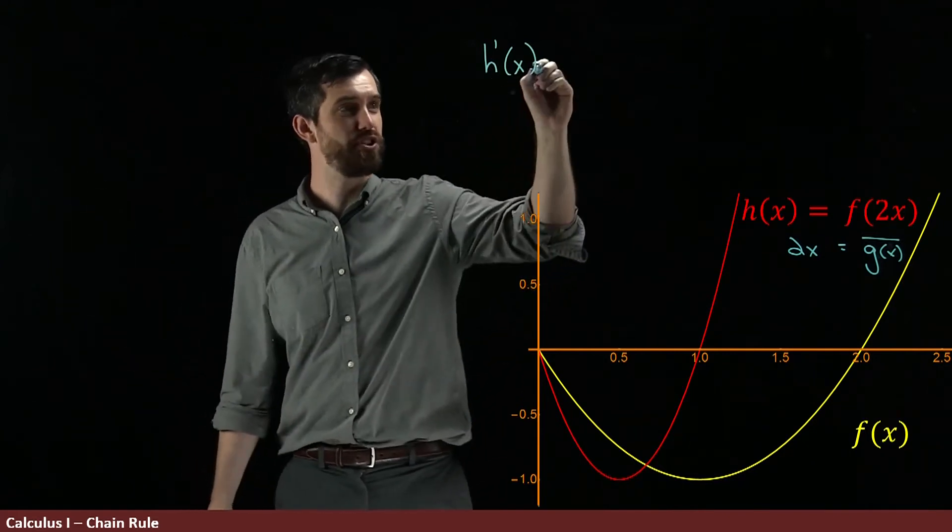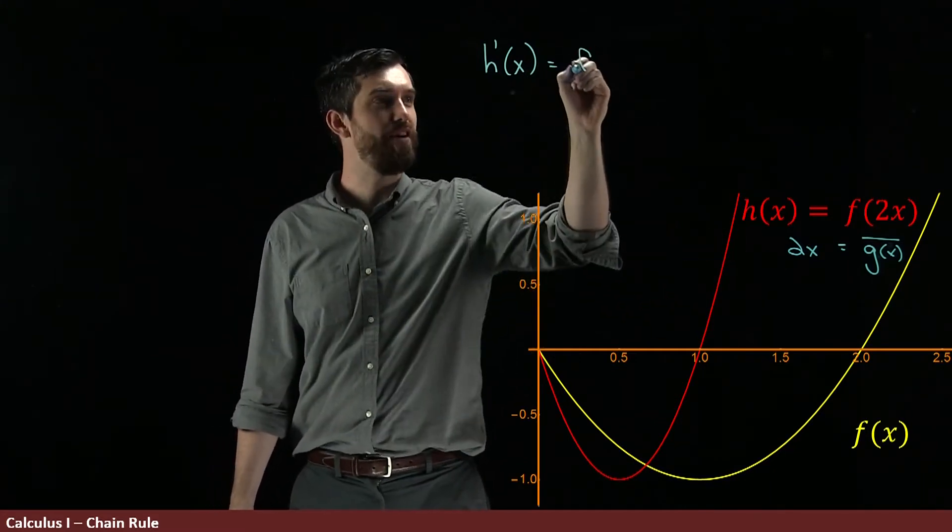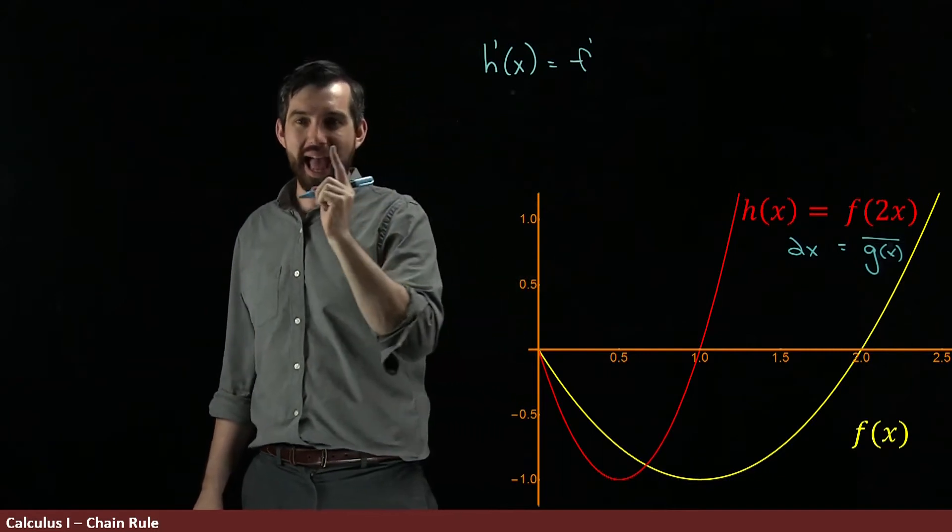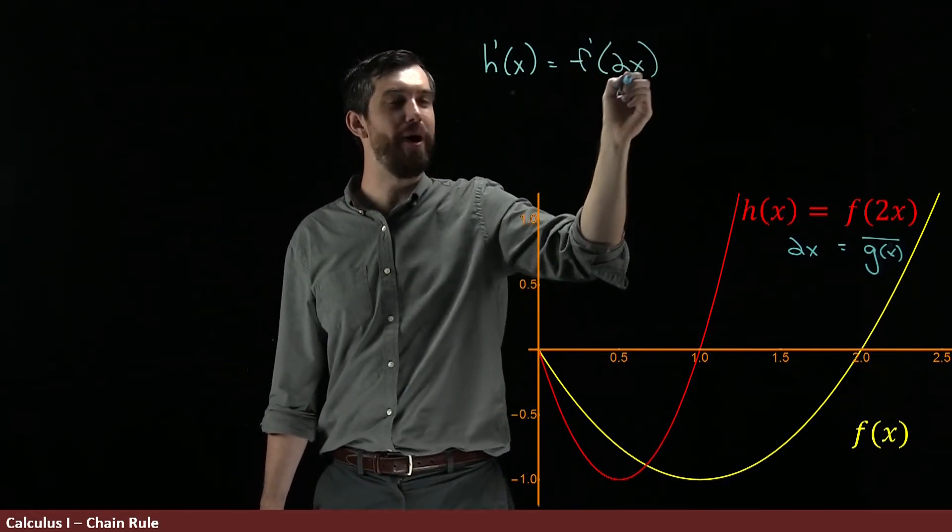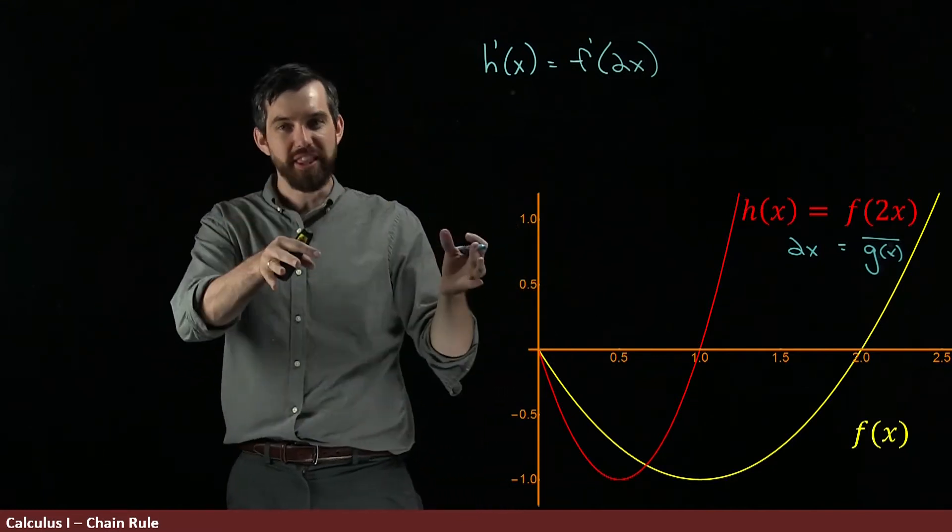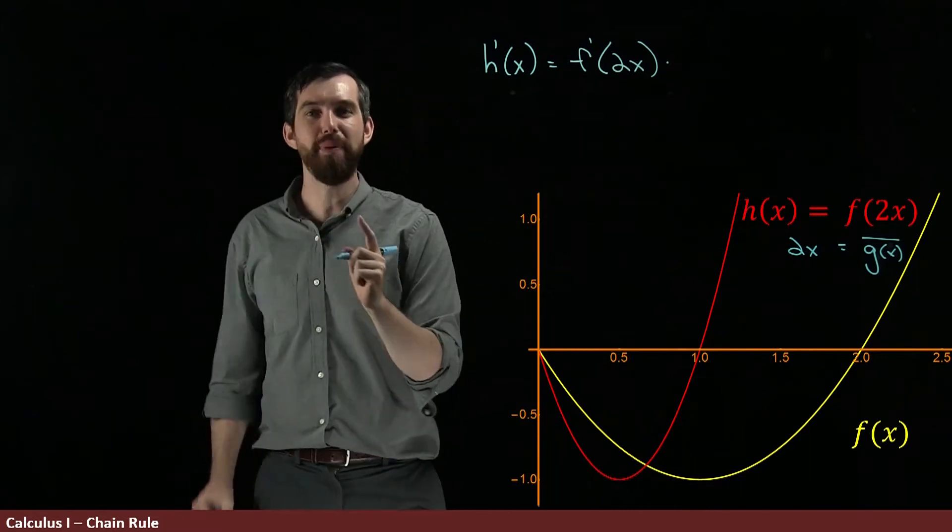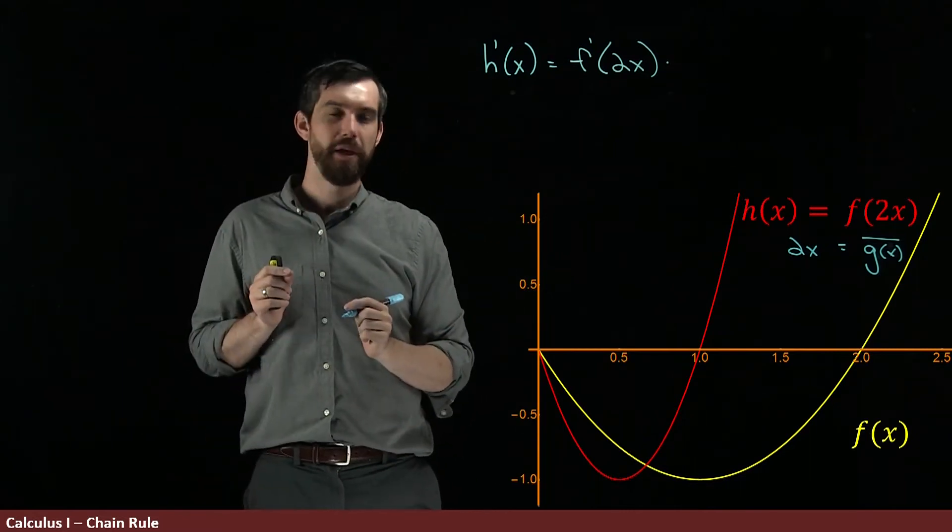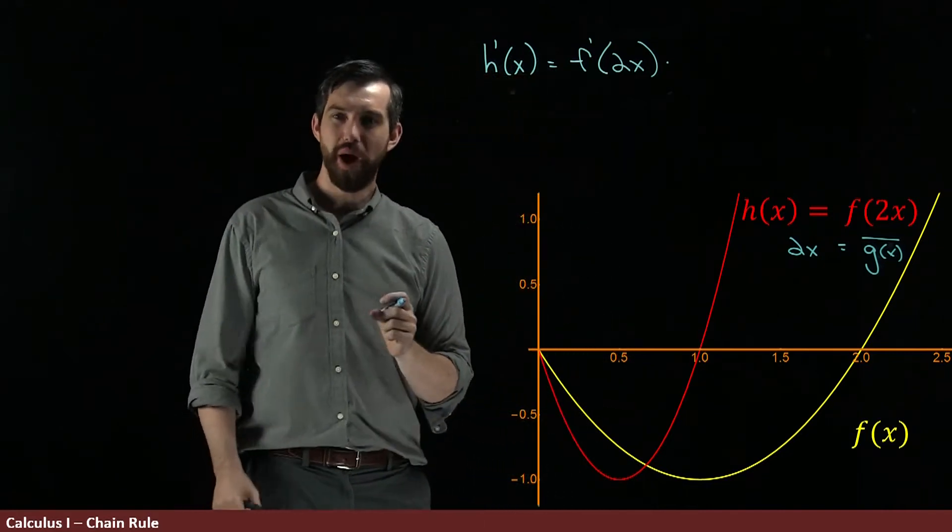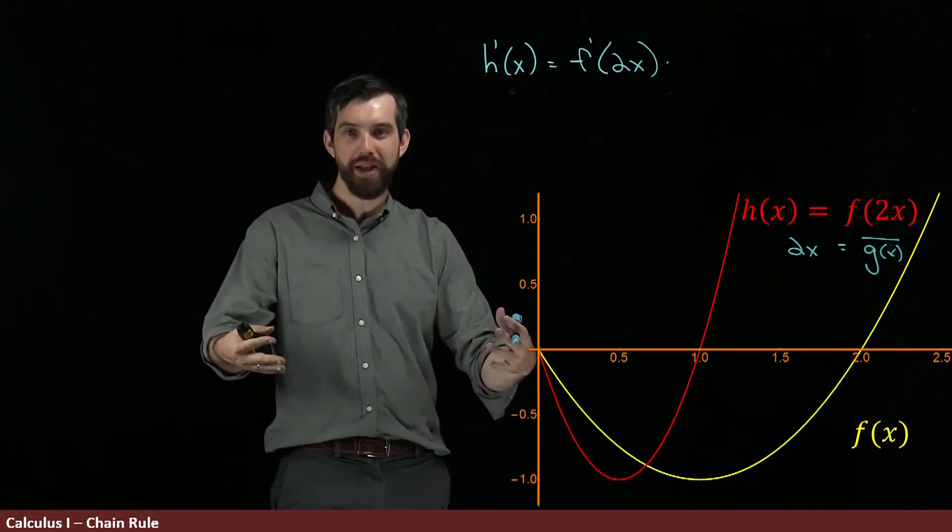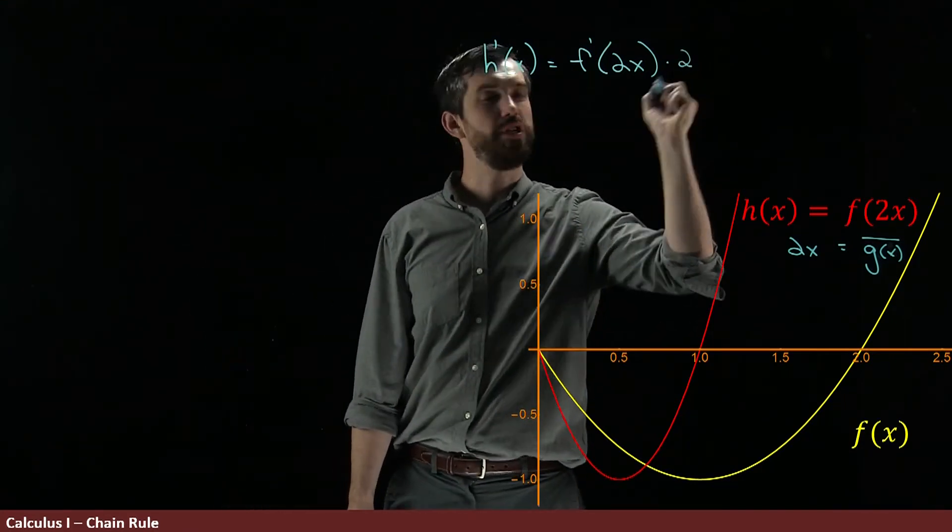And the chain rule says first, derivative of the outside, which is going to be the function f, so it's going to be f prime at the inside, so f prime at the value of 2x, derivative of the outside at the inside. And then I need to do that final point where I multiply by the derivative of the inside. But the inside function here is just going to be this 2x. So I multiply by the derivative of 2x. The derivative of 2x is just 2. So what I'm multiplying by is just 2.